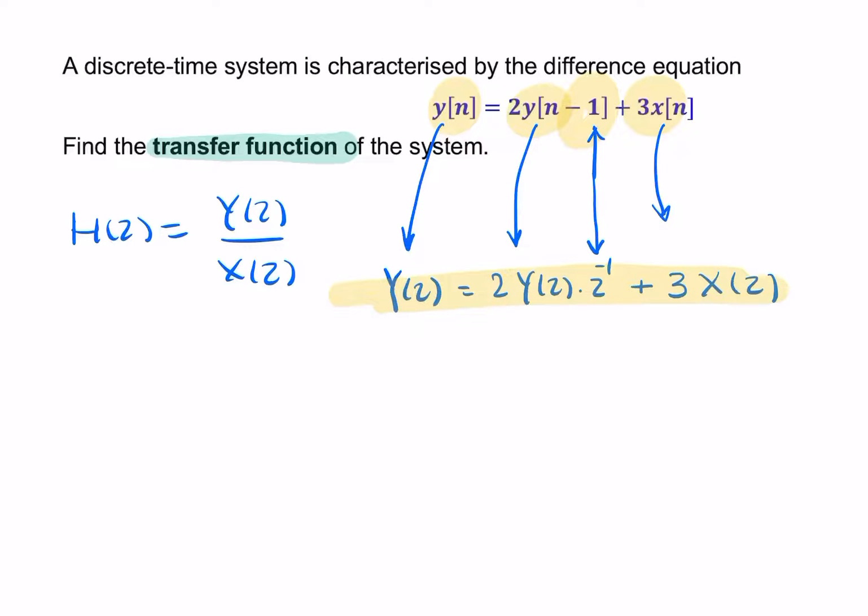So we want y of z in terms of x of z, but what we have here is y of z on the left and right-hand side. So first step is to bring the y's together. We'll have y of z minus 2y of z times z to the minus 1 equals 3x of z.